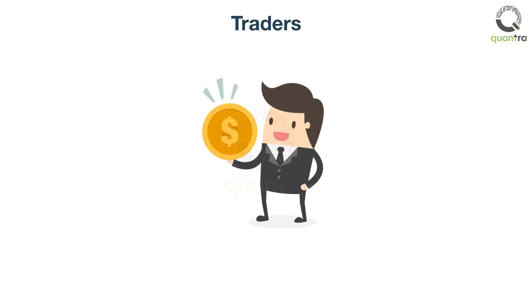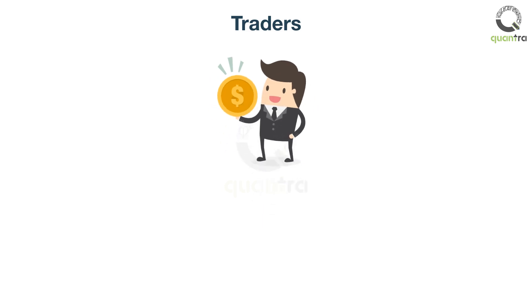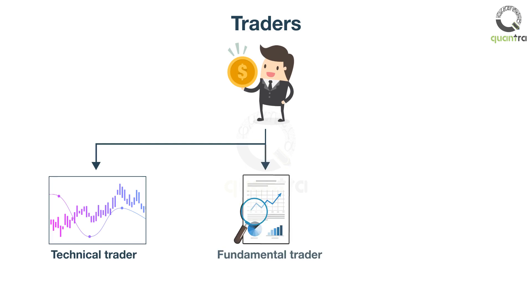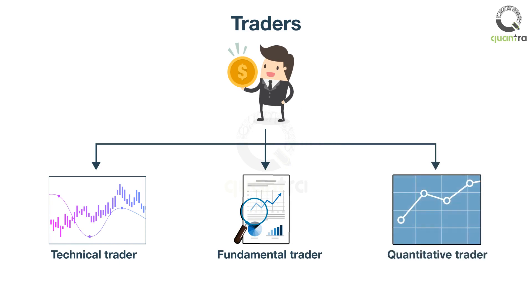These traders use various types of analysis to base their trades. For example, a technical trader is one who relies on past patterns in the data to make trading decisions. Whereas a fundamental trader bases her trading decisions on fundamental factors such as the macroeconomic situation, firm earnings, etc. Additionally, a quantitative trader employs mathematical computations and statistical analysis to perform trading activity.